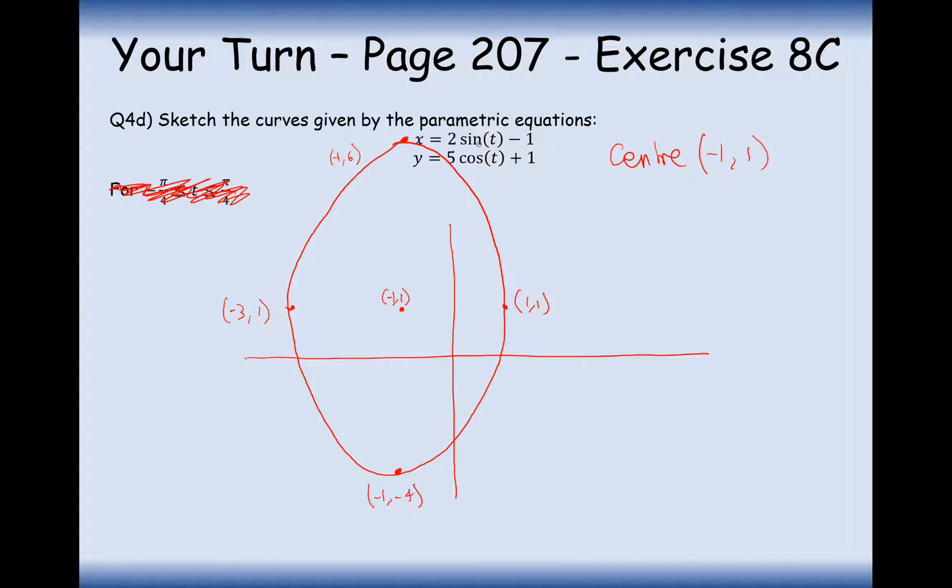And in this case here, the x equation had a sine on it and the y equation had a cos on it, so the other way around. Now that's not really going to affect how the graph looks. All it's going to do is it's going to affect the starting point.